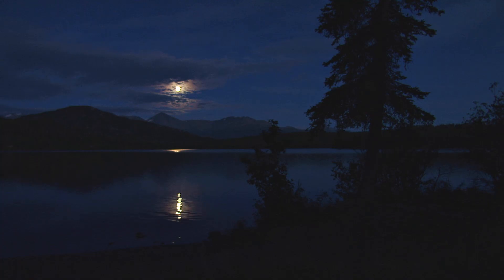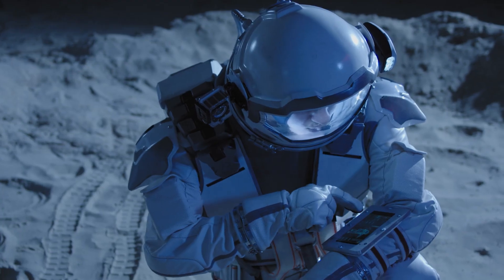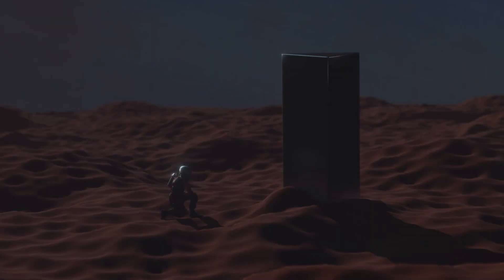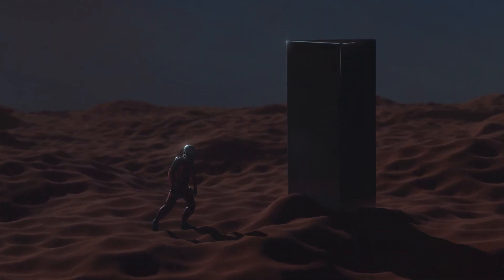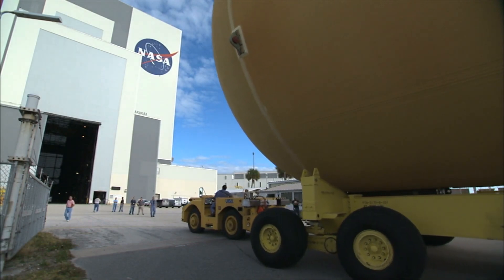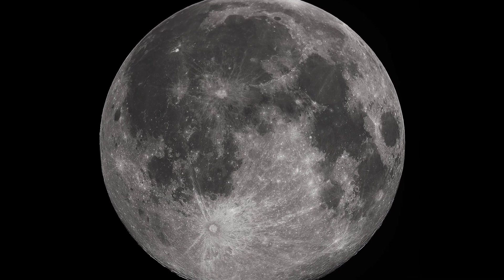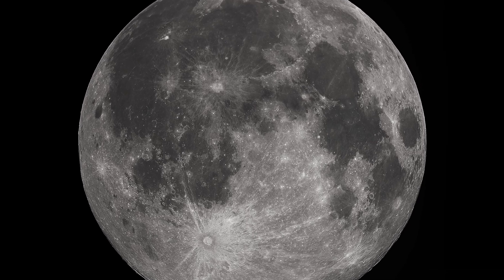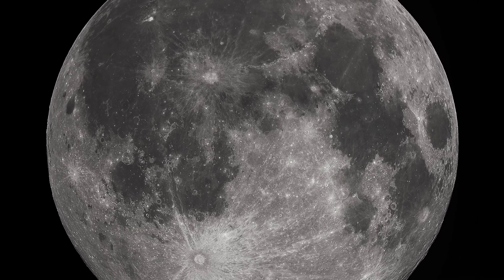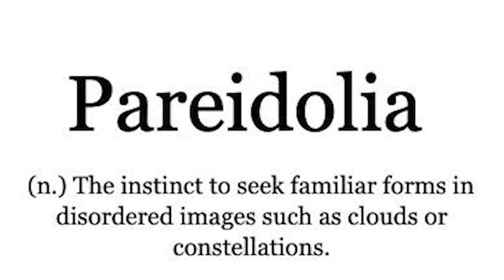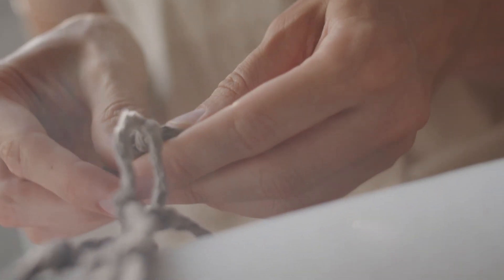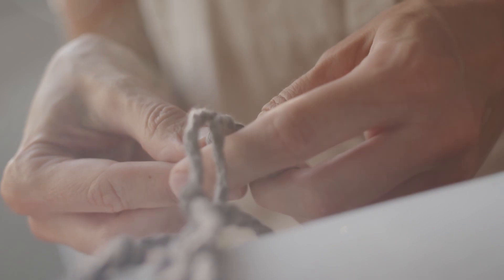The moon has been a subject of fascination and speculation for centuries, and with the advent of space exploration, numerous mysterious structures and conspiracy theories regarding NASA and the moon have emerged. The face on the moon, often attributed to a phenomenon called lunar pareidolia, is a fascinating example of how our brains are wired to recognize familiar patterns like faces in random visuals. Pareidolia, a type of apophenia, is essentially when we see meaningful connections in unrelated or random data.